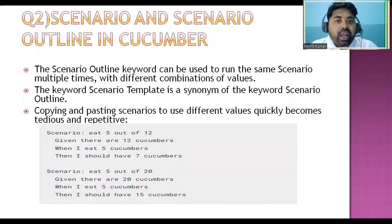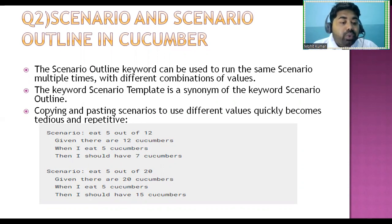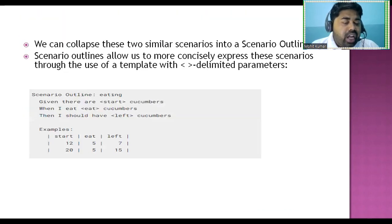The second question is: scenario and scenario outline in Cucumber. The scenario outline keyword can be used to run the same scenario multiple times with different combinations of values. The keyword 'scenario template' is a synonym for scenario outline. Copying and pasting scenarios to use different values quickly becomes tedious. In scenario outline, we can make the data dynamic — for example, passing multiple values like eating 5 out of 12 cucumbers.